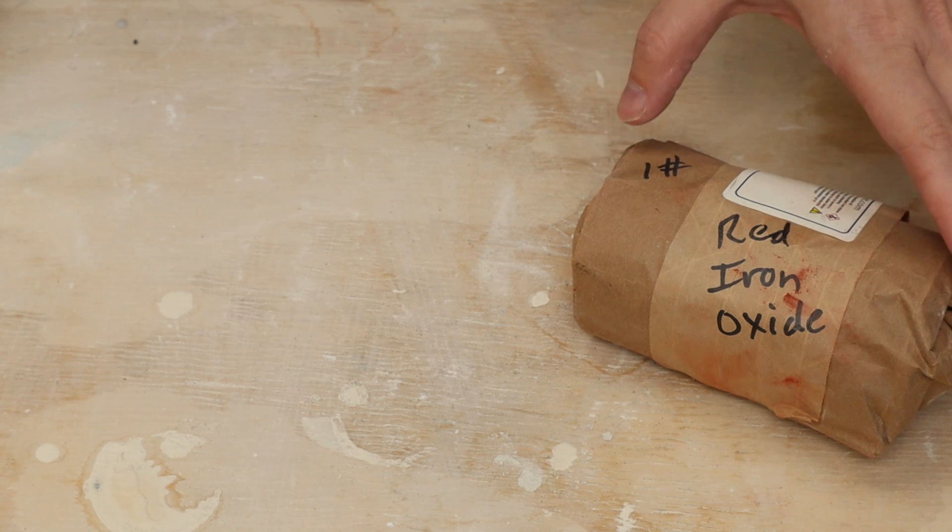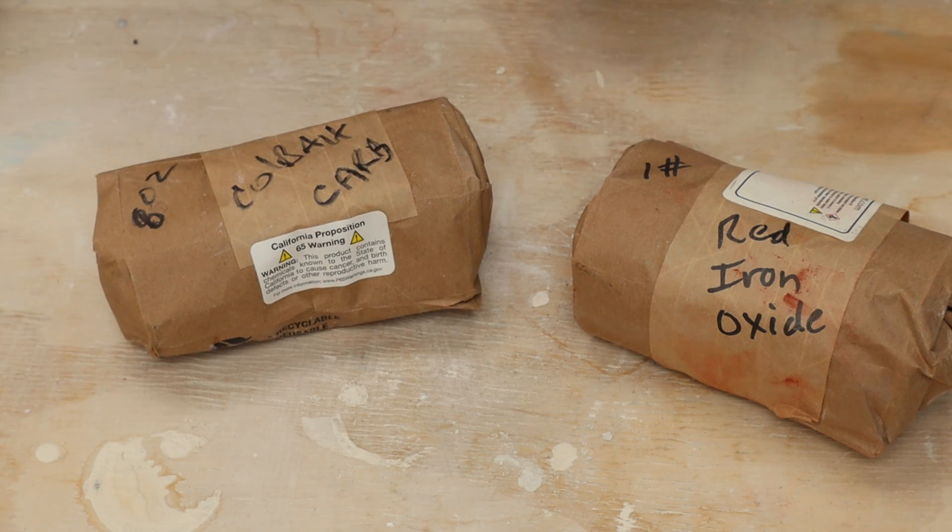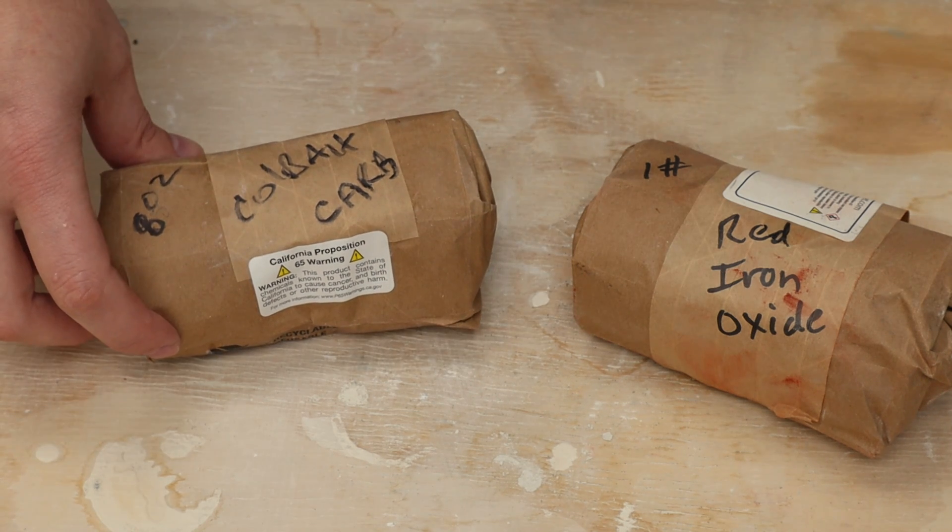I didn't see much for slips and clay bodies, but I did see in glazes that some people add cobalt into their glaze and that will result in a darker kind of blackish color as well. This is cobalt carbonate.